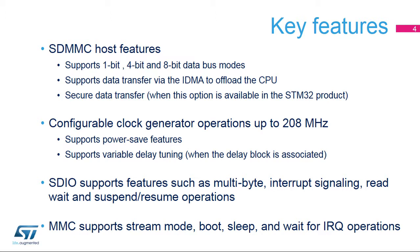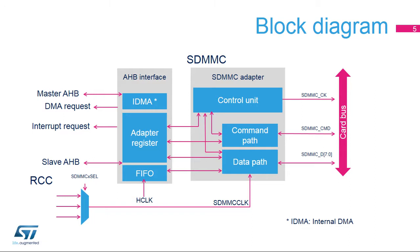In MMC mode, it supports stream mode, boot, and sleep operations. The SDMMC controller is an SDMMC bus master that provides all SD, SDIO, and MMC functions needed to interface with cards. It consists of an SDMMC adapter and an APB interface. The SDMMC adapter provides functions such as clock generation, command, and data transfer, while the AHB interface manages the control and status registers, FIFO buffers, as well as IDMA with linked list support and interrupt requests.